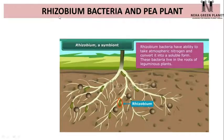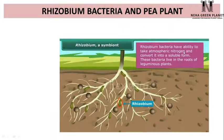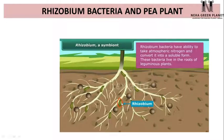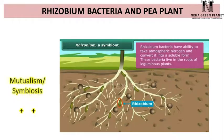Consider the example of Rhizobium bacteria and pea plants. Rhizobium bacteria are present in the root nodules of legume plants like pea. They have the ability to take atmospheric nitrogen and convert it into a soluble form — fixing nitrogen and providing it to the plants. In return, the plant undergoes photosynthesis and provides nutrition in the form of organic acids to the bacteria. Both Rhizobium bacteria and pea plant are benefited, making it a mutualism or symbiosis.